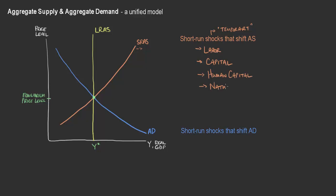We can also think about natural resources. For example, if in America we discovered a vast, newly found oil field that decreases the cost of oil — in essence, a decrease in input costs for many firms — that makes their business more profitable, or opens up new business lines that did not previously exist. Natural resources like this would represent a temporary shift in the short-run aggregate supply curve to the right.